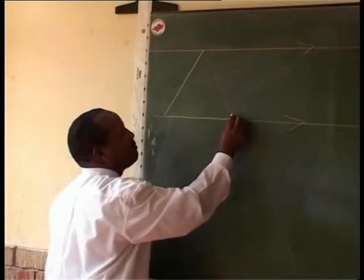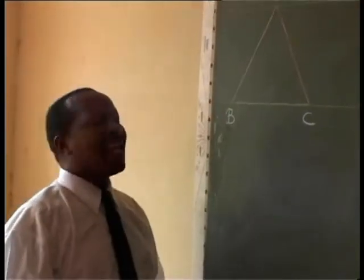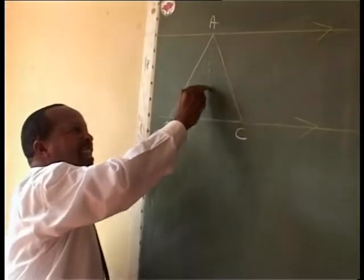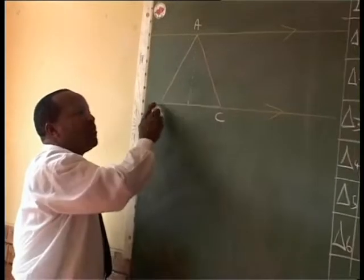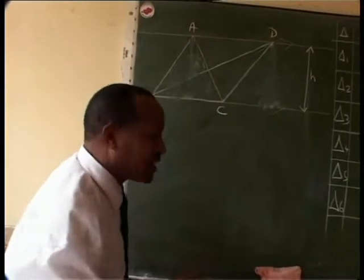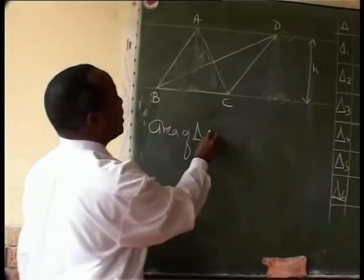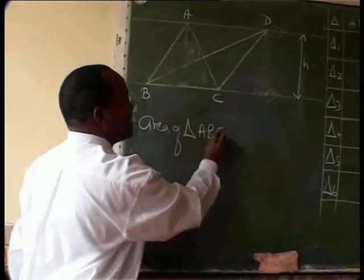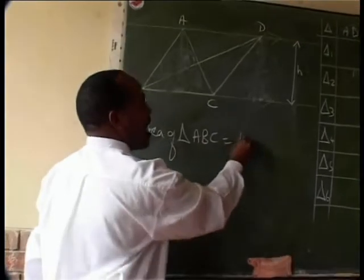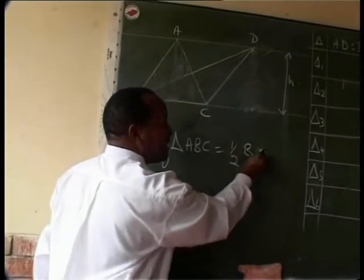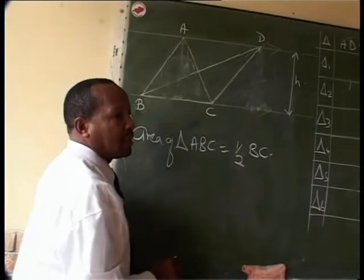The teacher begins by revising the area of two triangles with the same base and between the same parallel lines. If we want the height of triangle ABC, it will be the perpendicular distance from the apex to base BC. The learners confirm the formula: area equals half base times height. The base is BC and the height is H.